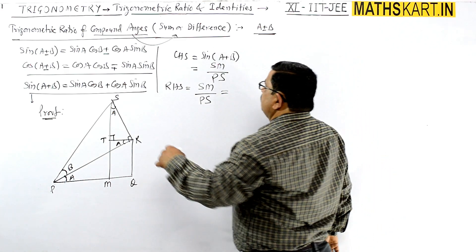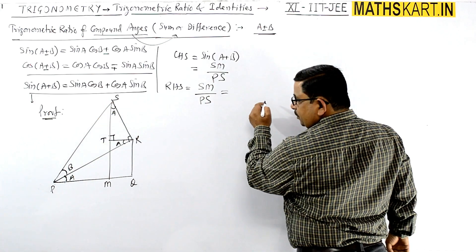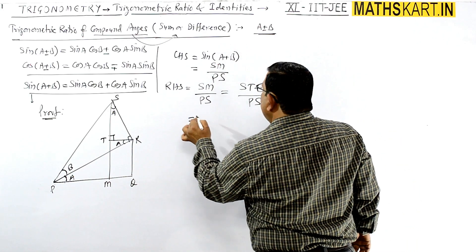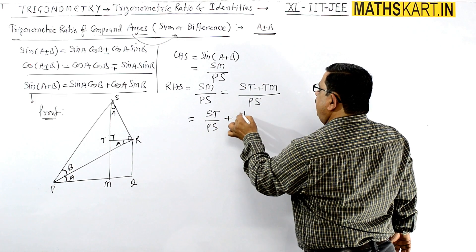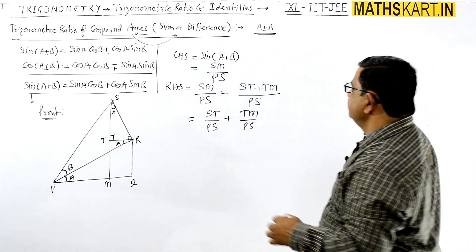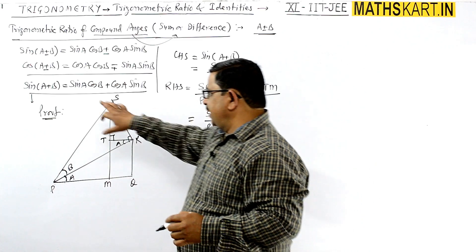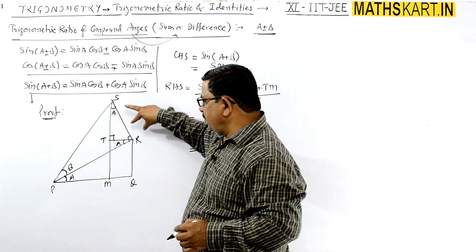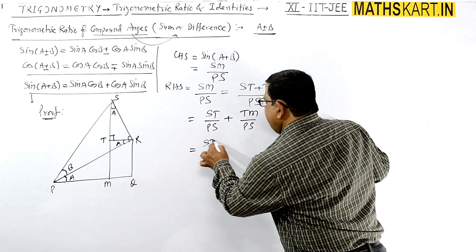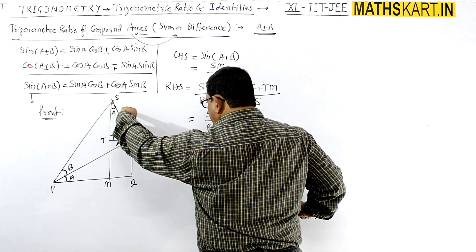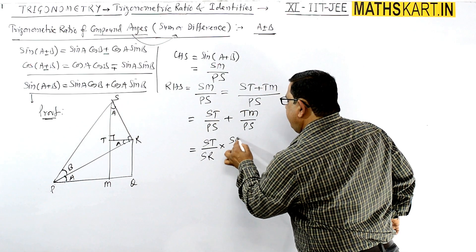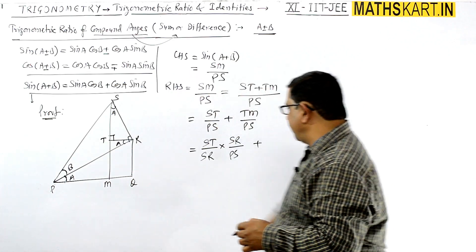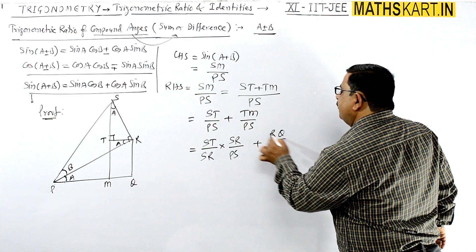Now going to the right-hand side, we have taken SM by PS. We will break this into two parts. The value of sin(A+B) is SM by PS. Now partition the SM distance into two parts: ST plus TM, divided by PS. So this gives ST by PS plus TM by PS — separate these lengths. Now for ST, this is base upon hypotenuse, so SR is required. Multiply and divide by SR. PS stays in place. Plus TM: TM can be equated with RQ, so this is RQ divided by PS.